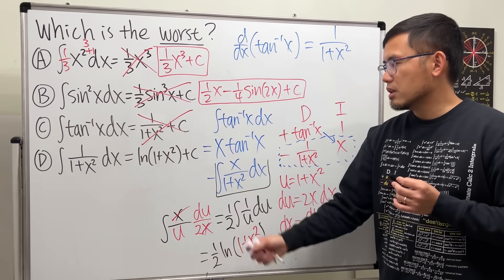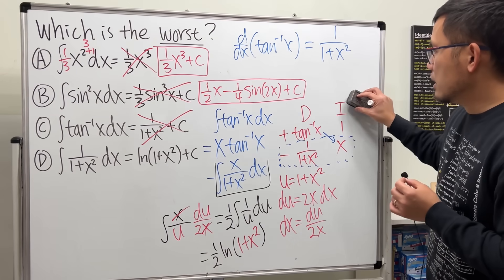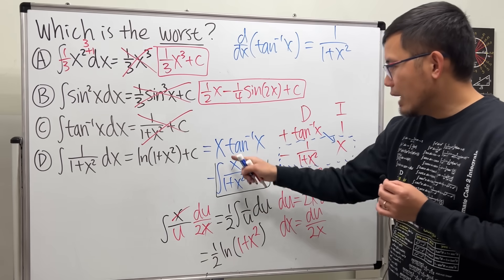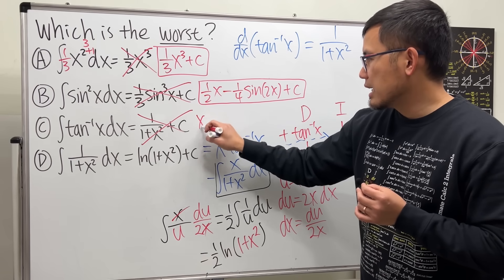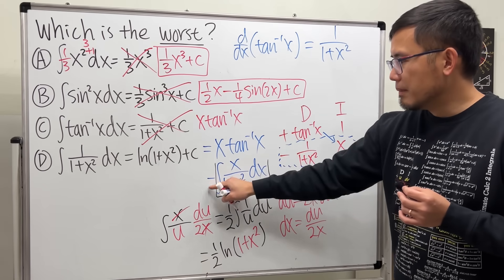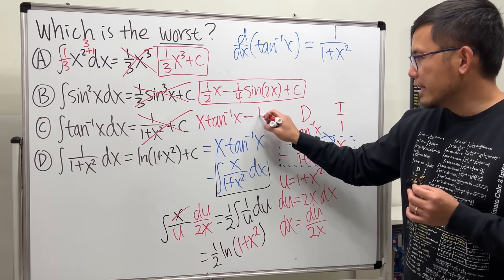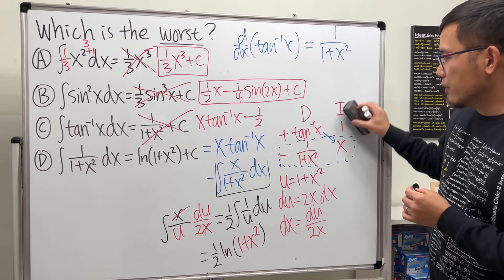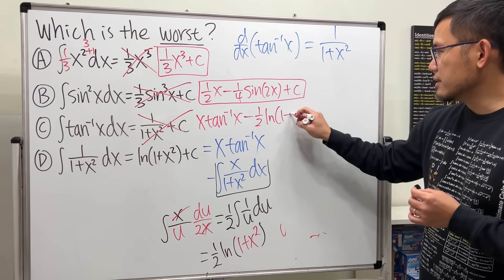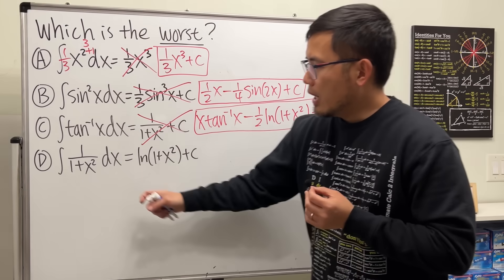Writing the complete answer: x times arctan(x) minus one half ln(1 + x²), plus C.